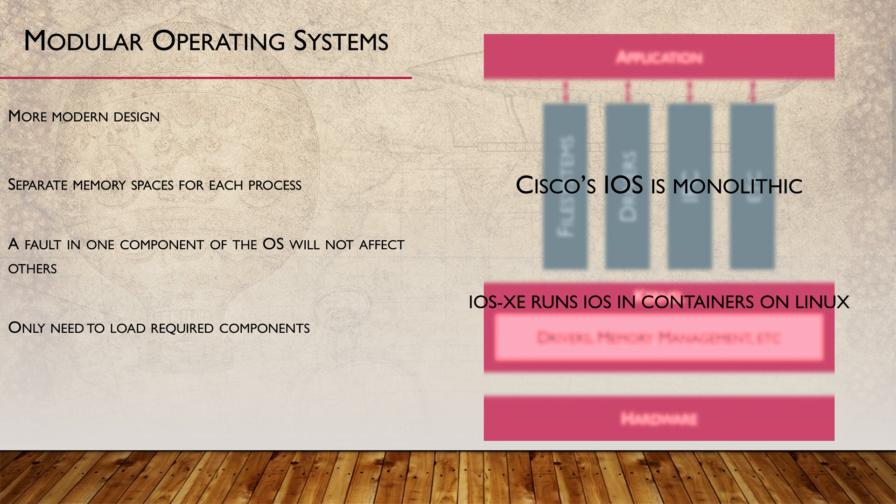Cisco improved on this with iOS XE, which is used on their modern routers and switches. It has Linux as the base operating system, and iOS runs as a monolithic application in a container. There's a link in the description which explains Cisco's operating systems as cows, of all things. It's actually a really good read — I recommend having a look.